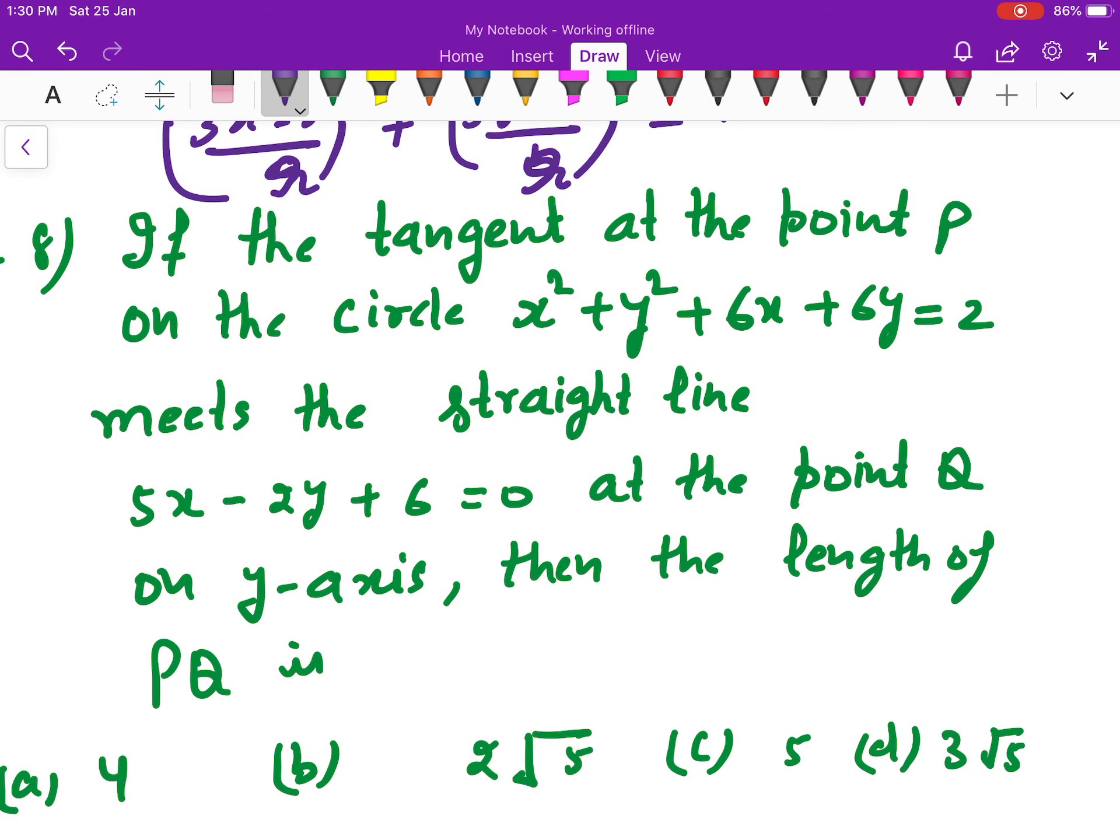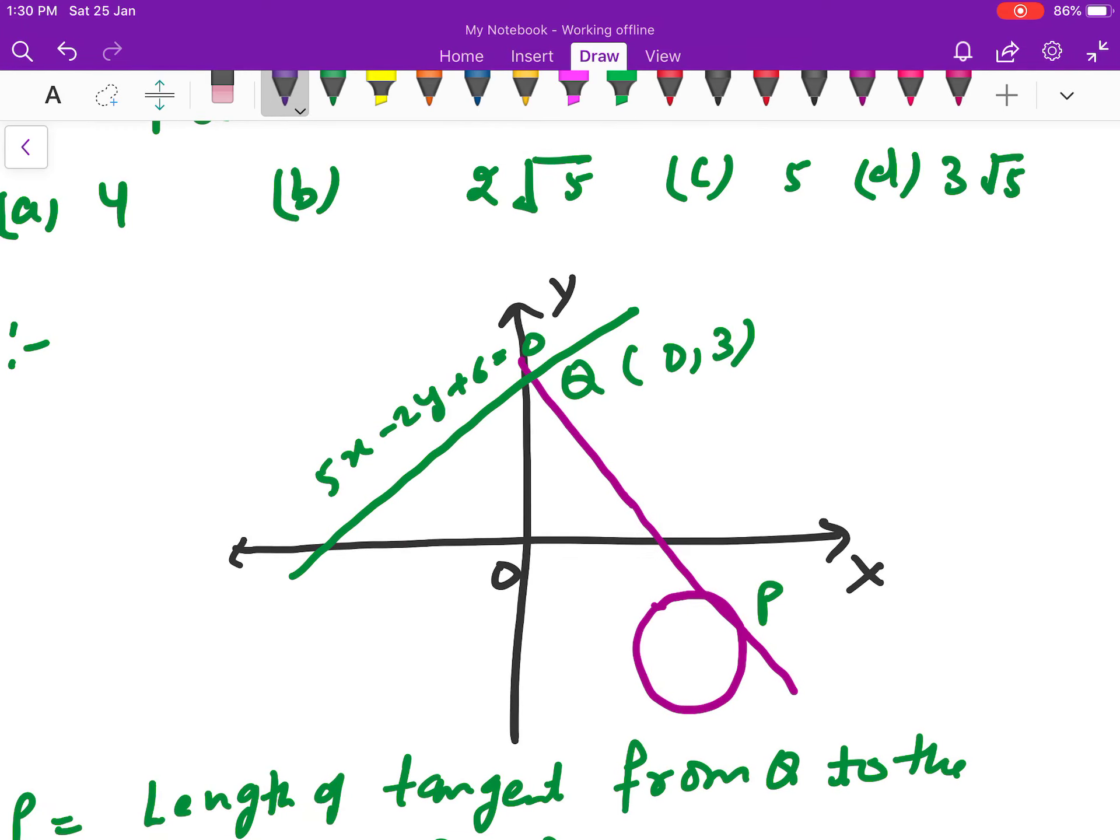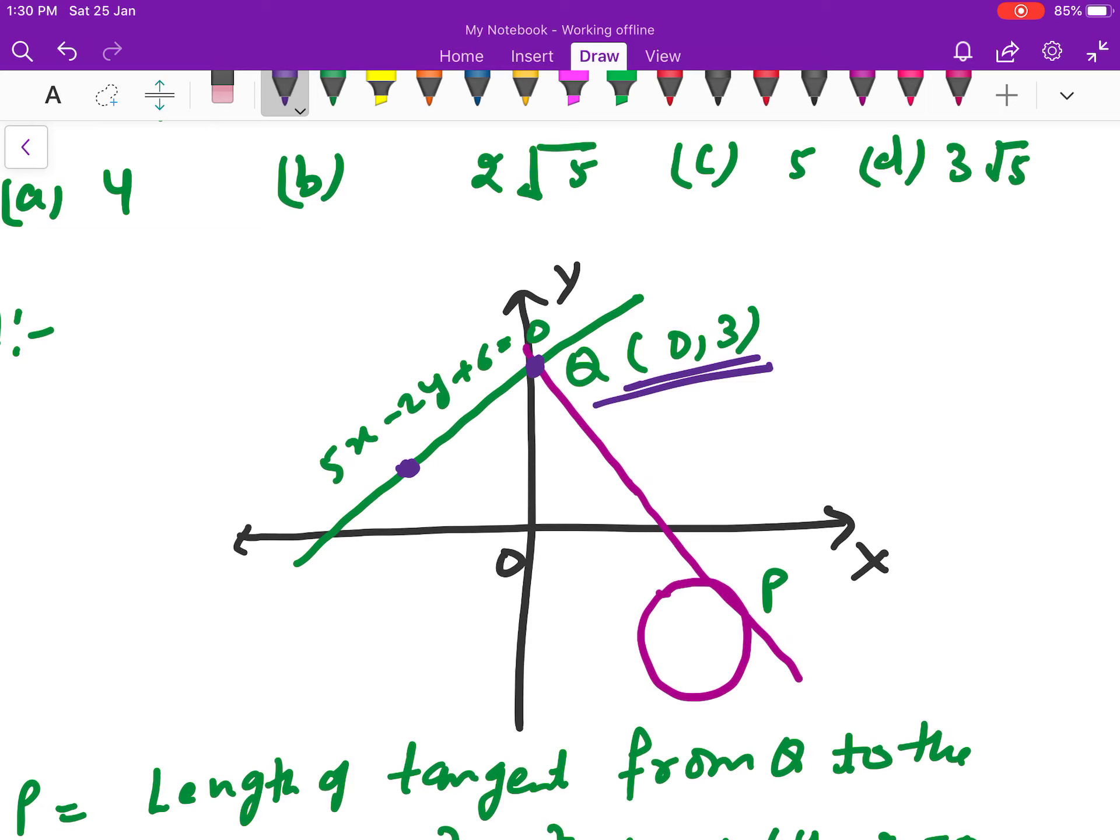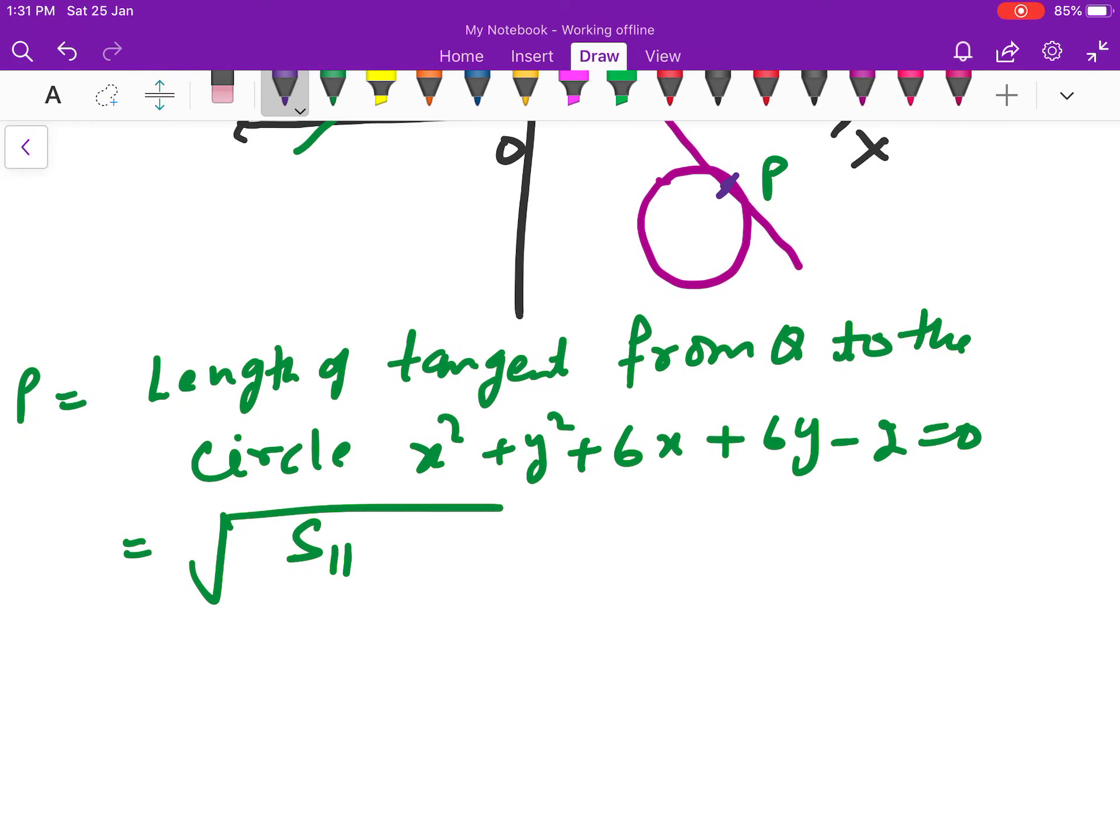Next question: If the tangent at P on this circle meets this straight line at point Q, which is on the y-axis, find the length of P. This is a simple concept - the length of the tangent. The length of tangent formula is √S11. The Q point coordinates are (0, 3). We have to put x = 0.